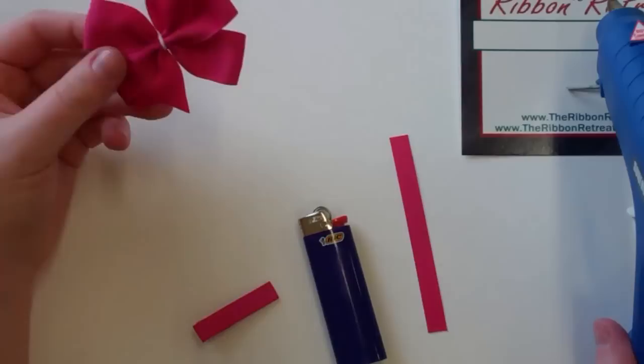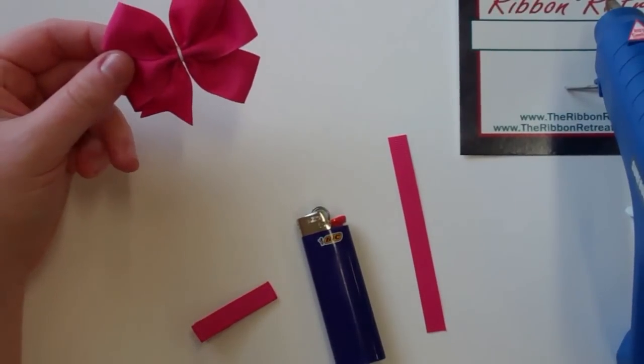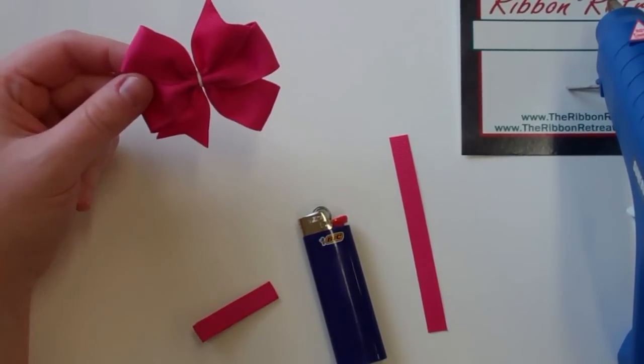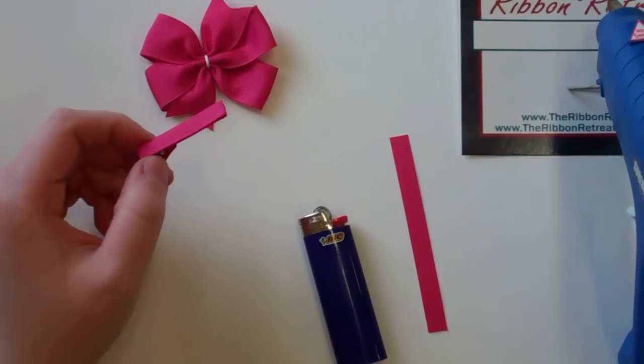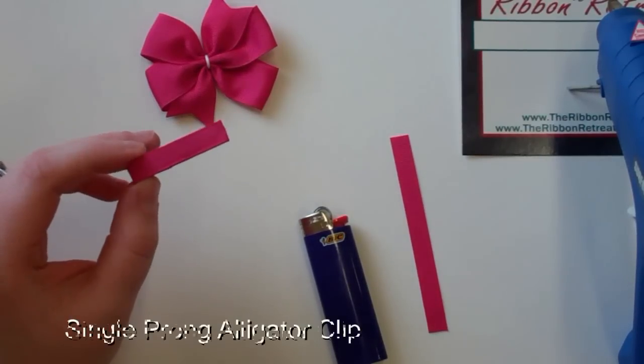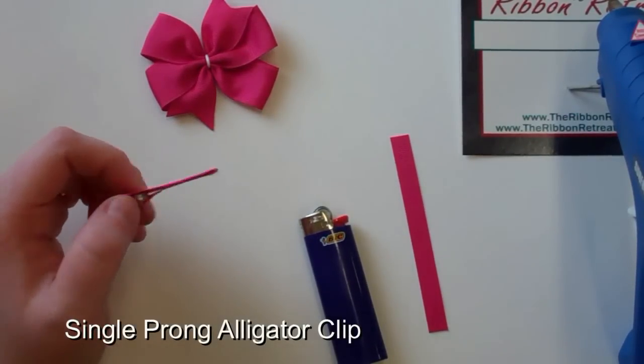What you will need is your made bow. I made this pinwheel bow on the three inch setting of the bow maker. You'll need a lined clip. This is a lined alligator clip, single prong.